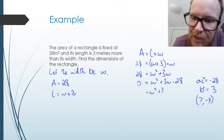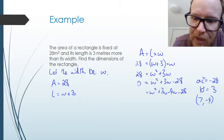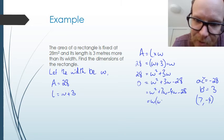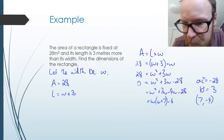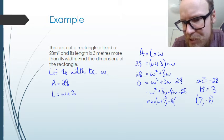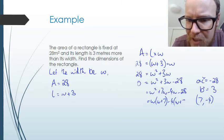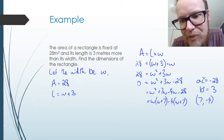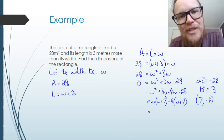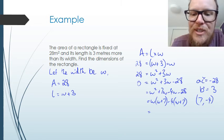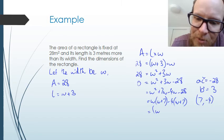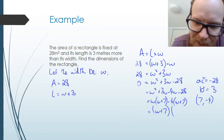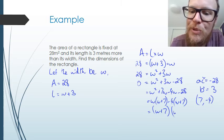w squared plus 7w minus 4w minus 28. Factorize the first two. I got w, that's the highest common factor. w plus 7 is left over. I've got negative 4 being the highest common factor of the second two, is equal to w plus 7. Because I've got negative here, negative 4 times a positive 7 is going to be that negative 28 right there. I get w plus 7 as being the common factor between the first and second terms on the next line here. So we get w plus 7. w plus 7 highest common factor left over with w minus 4.